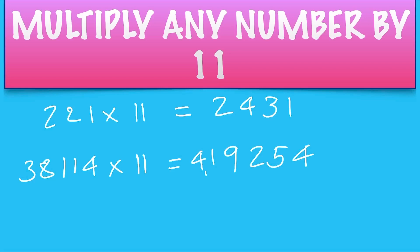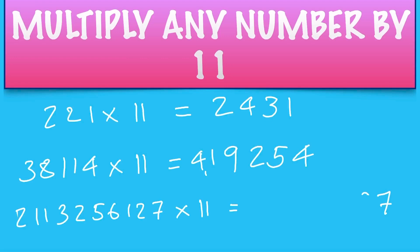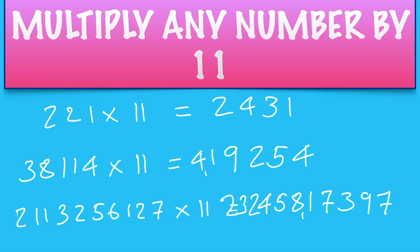One last example, nice and big: 2113256127 times 11. Start with 7, then 7 and 2 make 9, 2 and 1 make 3, 1 and 6 make 7, 6 and 5 is 11, 5 and 2 is 7 carry 1 is 8, 2 and 3 is 5, 3 and 1 is 4, 1 and 1 is 2, 2 and 1 is 3, and 2 and nothing is 2. So you get 2, 3, 2, 4, 5, 8, 1, 7, 3, 9, 7.